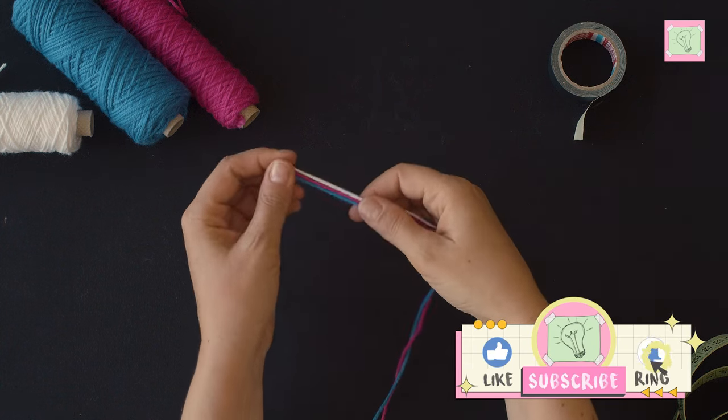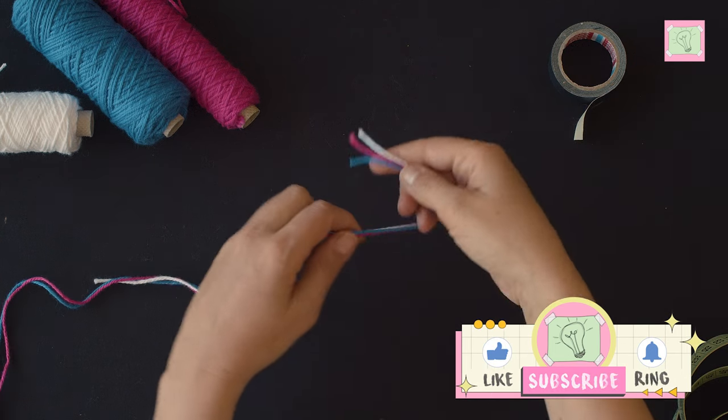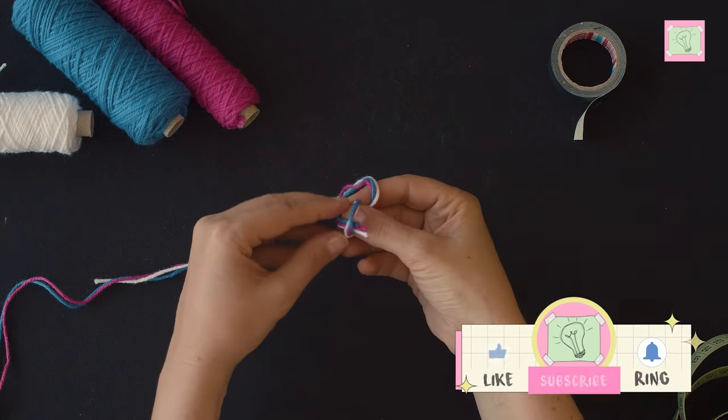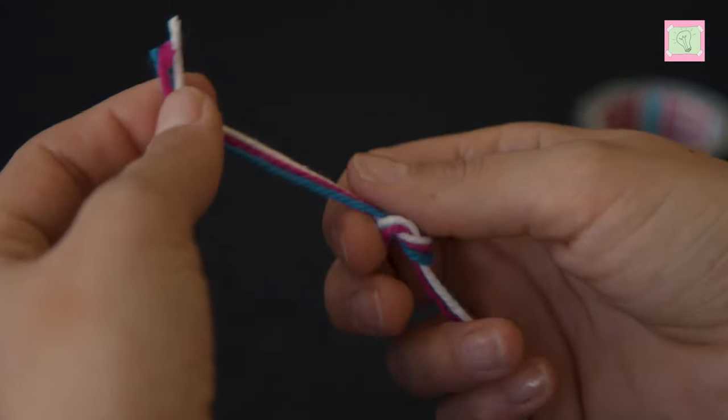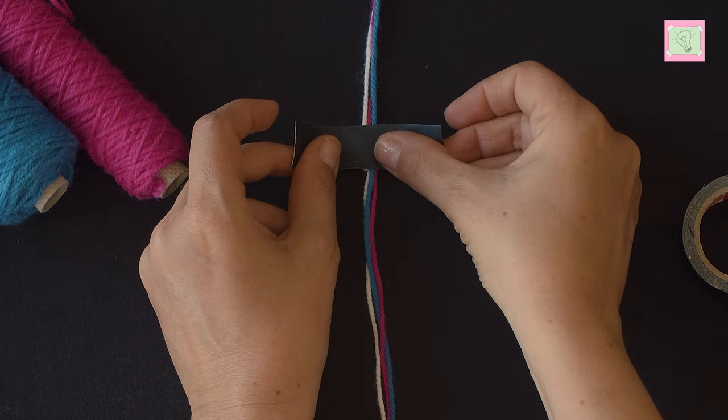Place the ends of the threads exactly on top of each other. Knot them together at about 10 centimeters or 4 inches from their ends. Then stick your threads on a table at the height of the knot you just made.